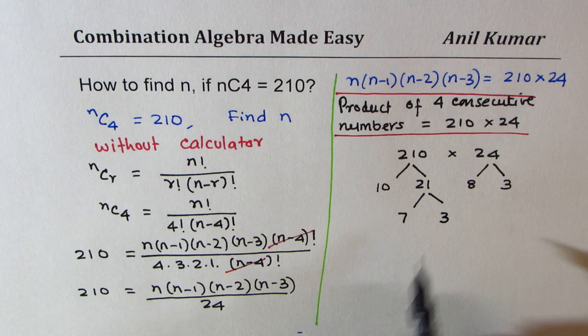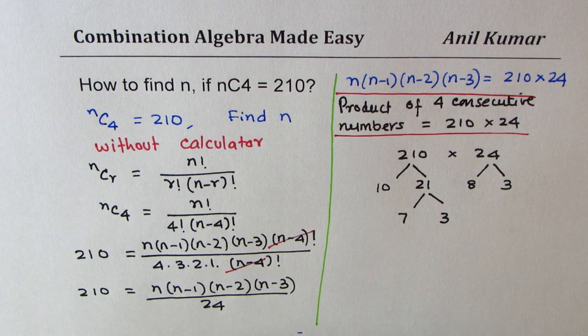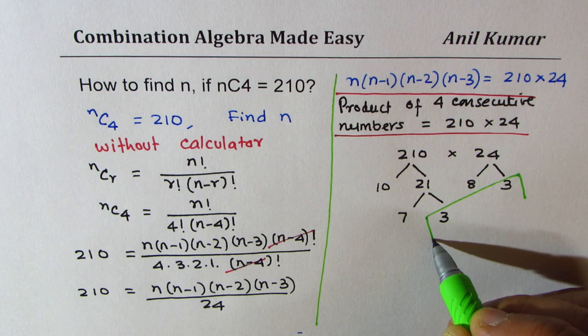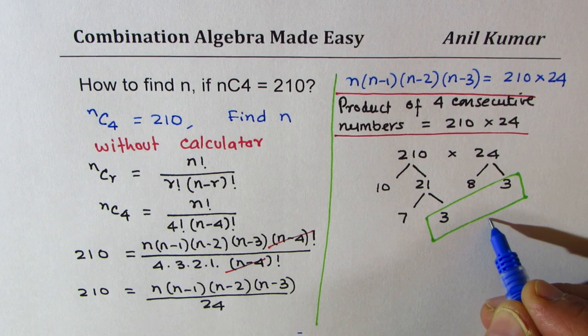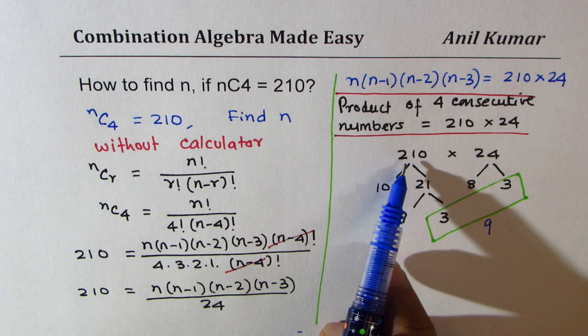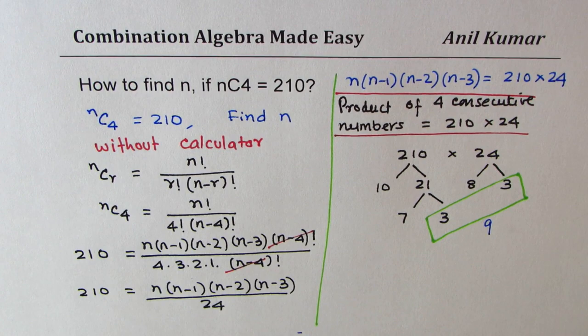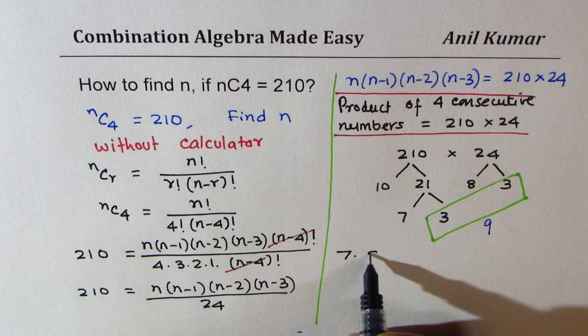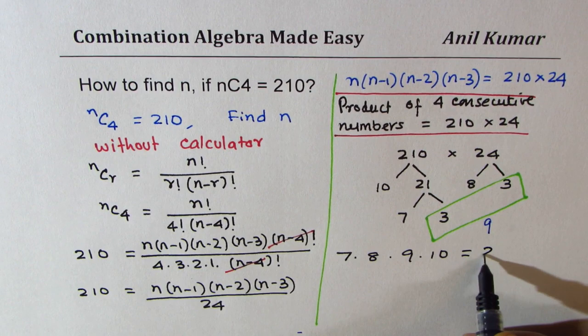Now if you look at it you can see 4 numbers. Combining 3 and 3, 3 times 3 is 9. Do you see that? So we have 4 numbers which will result into 210 times 24: 7, 8, 9, 10. Does it make sense? So we could write this as 7 times 8 times 9 times 10 should be equal to 210 times 24.